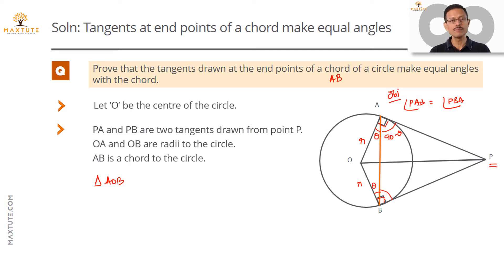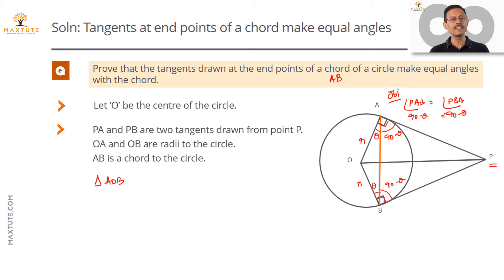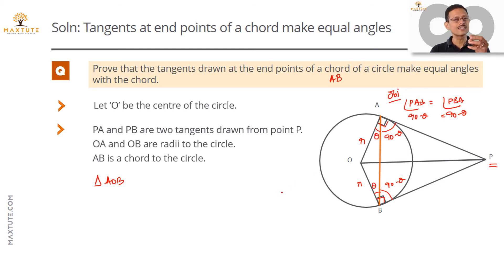Therefore angle ABP, which is angle PBA, equals 90 minus theta as well. So we have angle PAB equal to 90 minus theta and angle PBA equal to 90 minus theta, which proves that angle PAB equals angle PBA — exactly what we set out to prove.